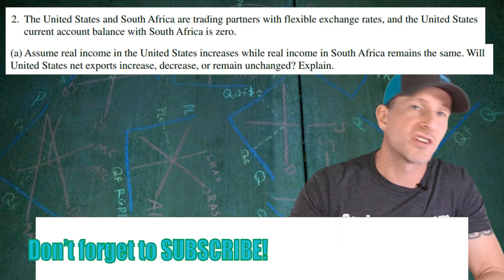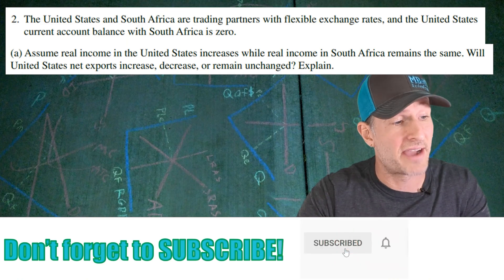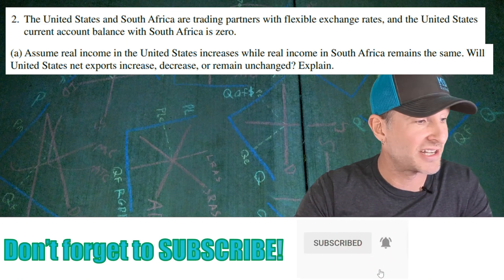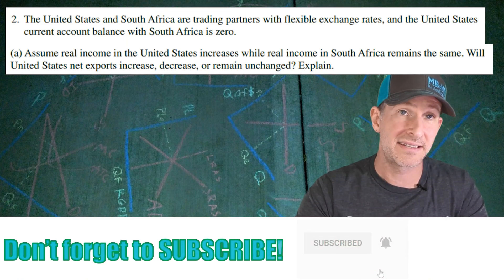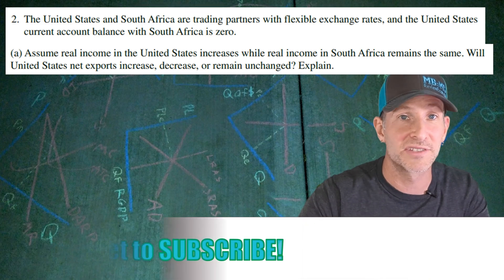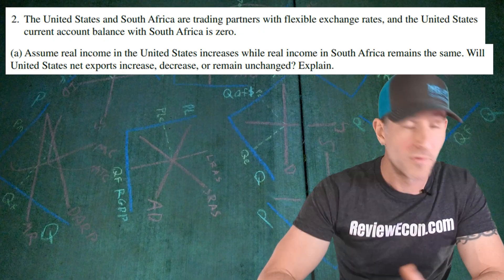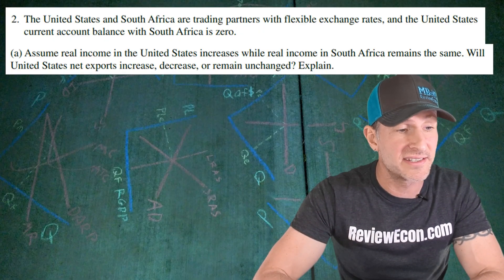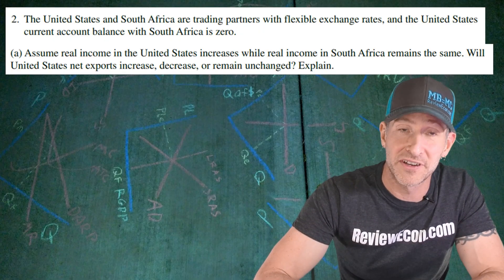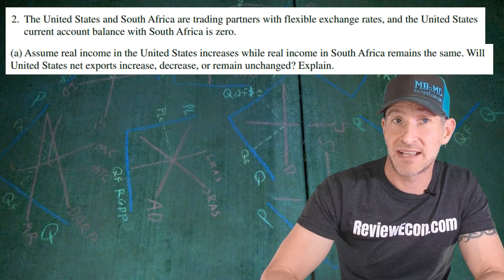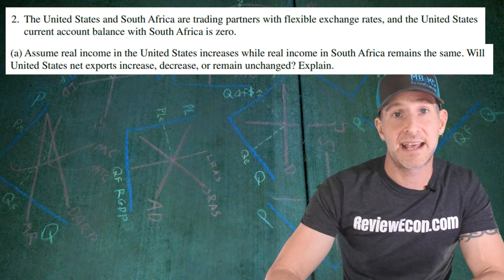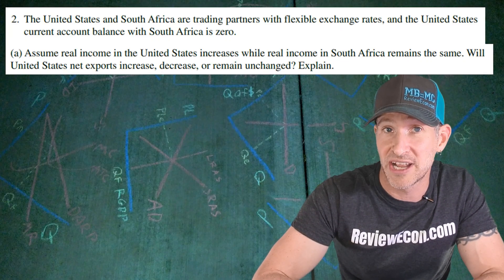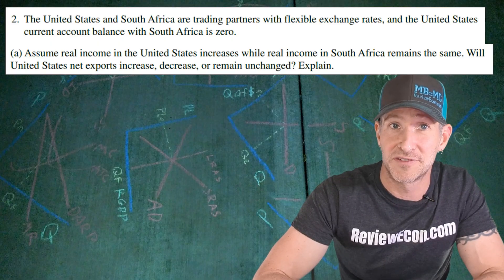This question starts off with the United States and South Africa being trading partners. They have flexible exchange rates and the United States current account balance with South Africa is currently zero. We are going to assume that United States real income increases while South Africa's real income remains the same. We have to say if United States net exports will increase, decrease, or remain unchanged, and we have to explain why.